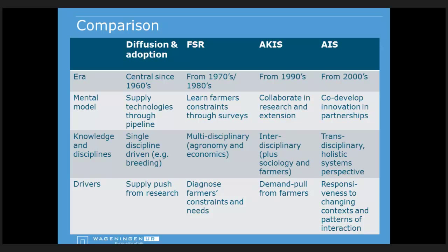In the diffusion and adoption perspective, a single discipline makes an invention brought to farmers by extension. Now we think about different disciplines and different bodies of knowledge that all matter: the researcher's, the farmer's, advisors, and rural policymakers all have relevant knowledge. The AIS perspective embraces a transdisciplinary approach - various scientific disciplines combined with stakeholder knowledge in a truly holistic perspective.